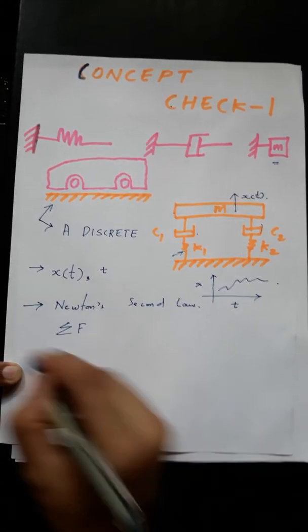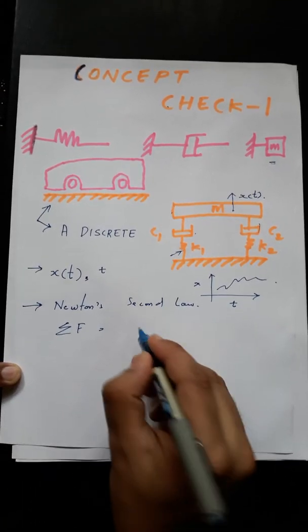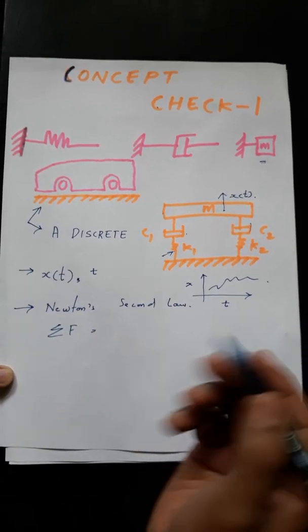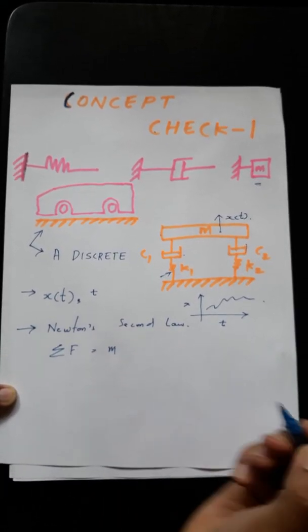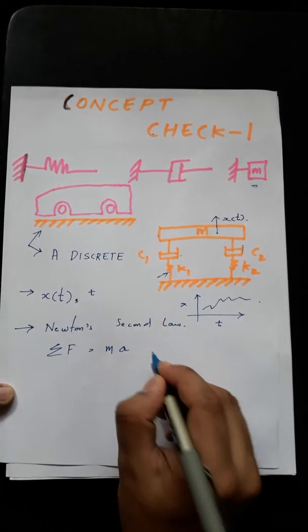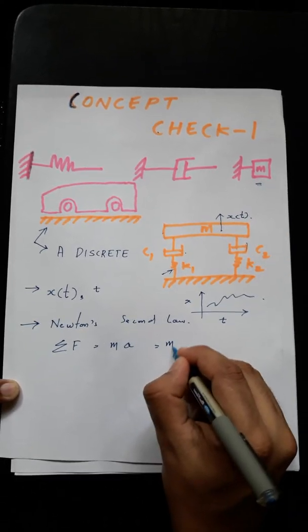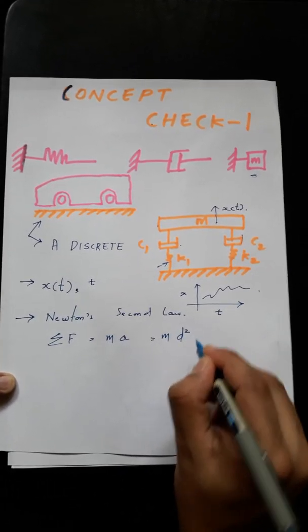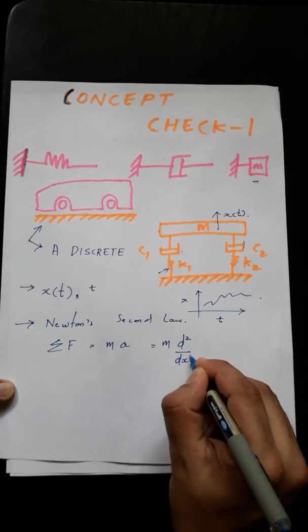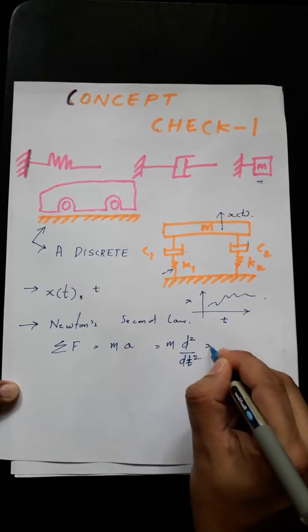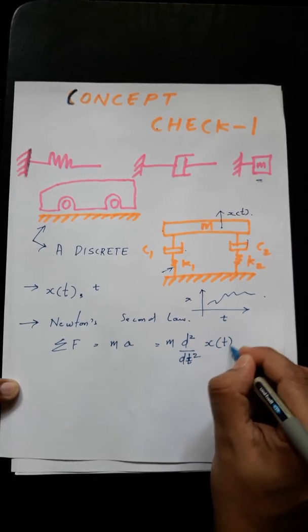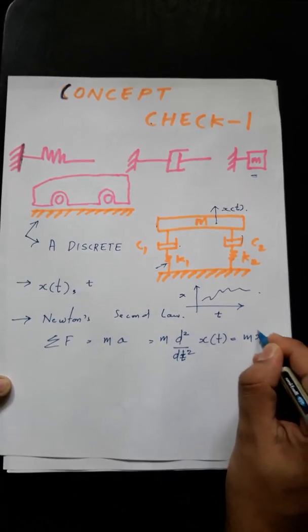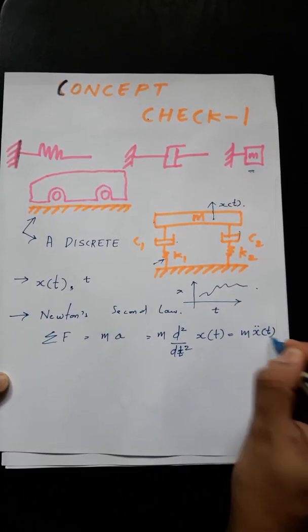You have to figure out what equation governs a system and mostly that equation will be Newton's second law. Newton's second law tells if you sum up all the forces acting on the body, that will be equal to, in its simplified form, mass times the acceleration.